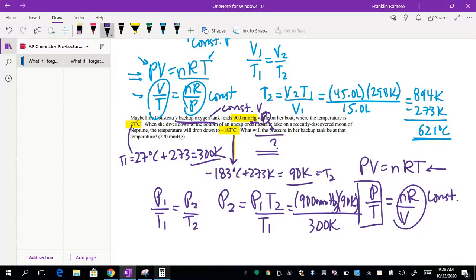I could go ahead and do this math on the calculator, but notice that there's a way to easily reduce. Basically, 300 goes into 900 three times. So if I multiply 3 times 90, I should get 270, and my Kelvin units drop out. This should be 270 millimeters of mercury for my new pressure.